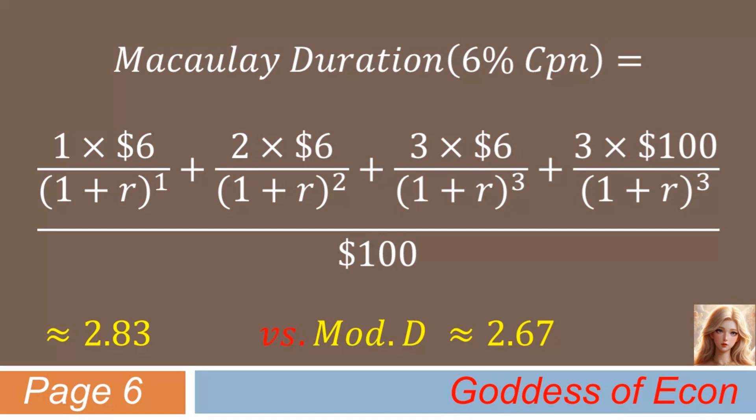Now, let's look at the case where the coupon rate is only 1%. This time, Macaulay duration is 2.97, which is extremely close to the bond's maturity of 3 years. How about modified duration? Wow! It's 2.94. Now, you see that these two metrics are not much different from each other.